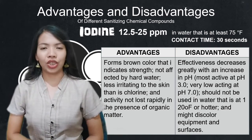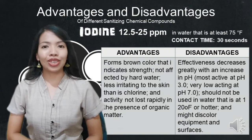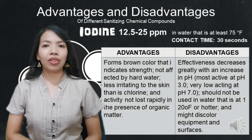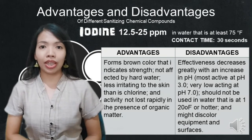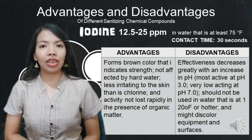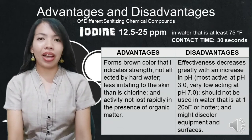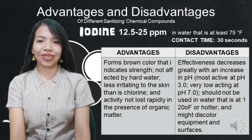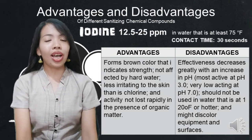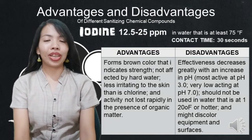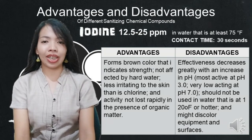The advantages of iodine solution: you can see it is effective when it forms a brown color during testing, indicating its strength. It is not affected by hard water, less irritating to the skin, and activity is not rapidly lost in the presence of organic matter. Disadvantages: effectiveness decreases at high pH, it should not be used in water at 100 degrees Fahrenheit or hotter, and it may discolor equipment and surfaces. Follow the 30-second contact time to avoid discoloration.